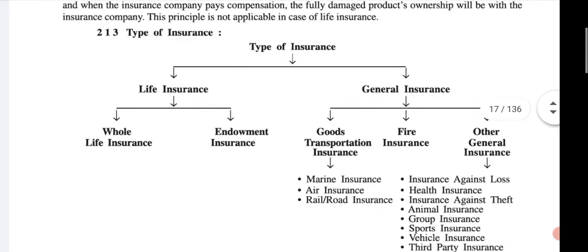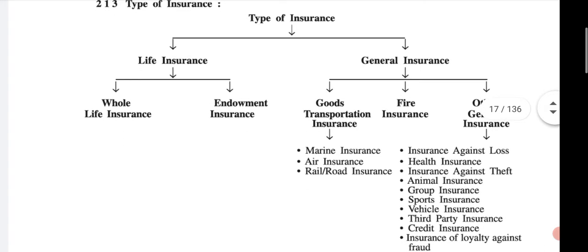Then the next one is types of insurance. There are mainly two types of insurance: the first one is life insurance and the second is general insurance. Life insurance is for life, and general insurance includes other types of insurance for non-living things.